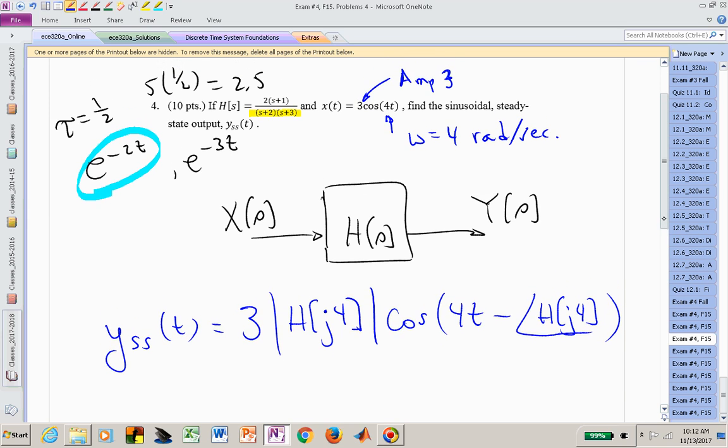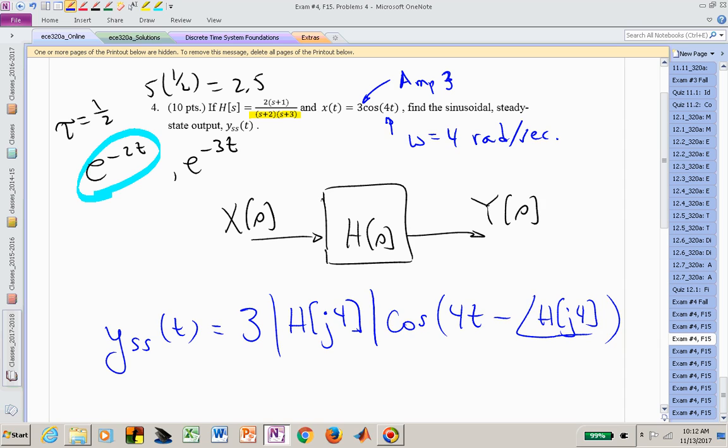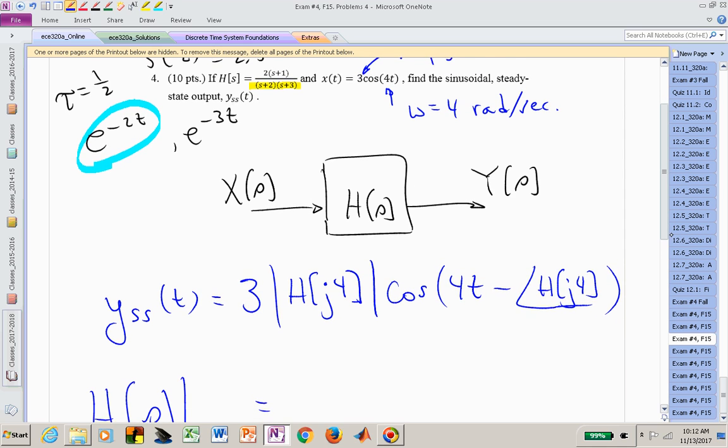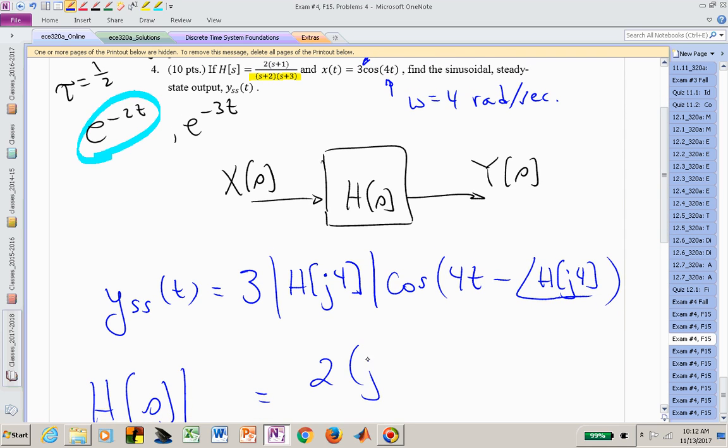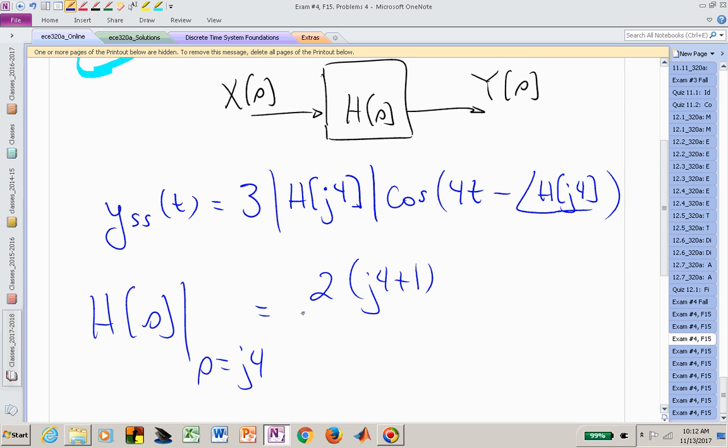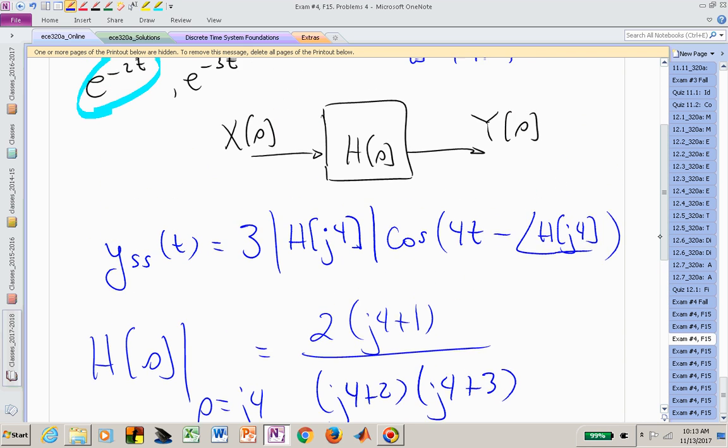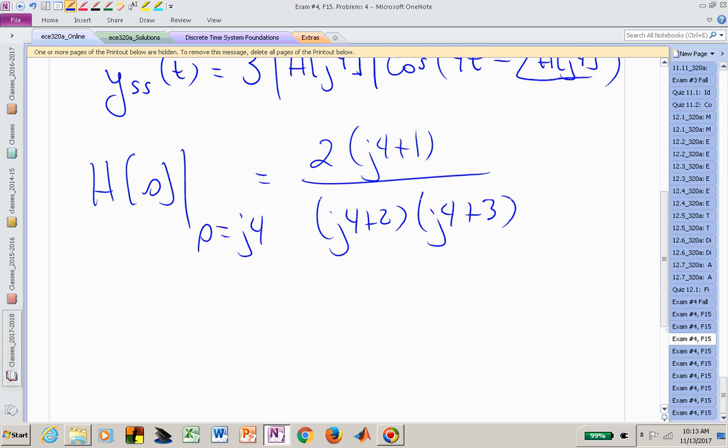So now we need to evaluate this complex number, the transfer function H of S evaluated at the frequency that we're shaking this system at, which is four radians per second. Find the magnitude and the angle and we're finished. So what we need to do is we need to find H of S when S is equal to J4, or everywhere we have an S in this transfer function we replace it with J4. Now we have 2 times J4 plus 1 all over J4 plus 2 times J4 plus 3. And now we simply have to do the complex algebra.